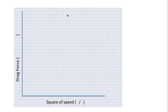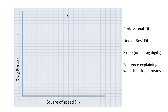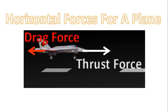Once you've completed the table, I'd like you to work on a graph where the y-axis is drag force and the x-axis is the square of speed. Please include a professional title, a line of best fit, slope with units and significant digits, and a sentence explaining what the slope means. Hopefully you understand that as speed increases, drag force increases, and you'll make the connection between the square of speed and drag force using the graph.